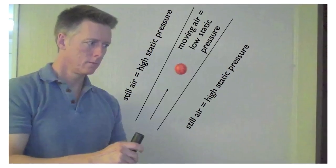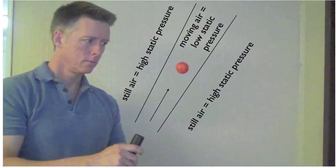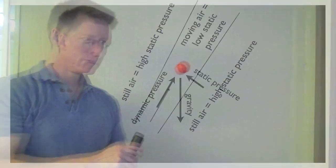In the column of moving air we have low static pressure. In the still air surrounding that column of moving air we have a high static pressure, or higher than what's in the column in the moving air.